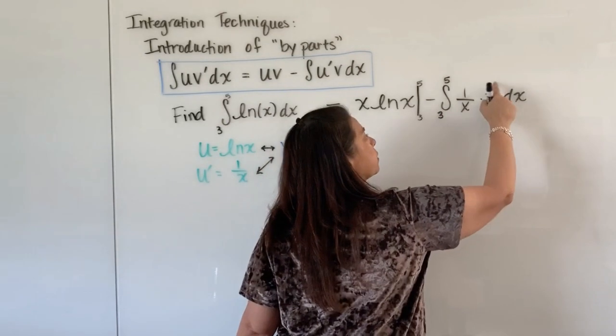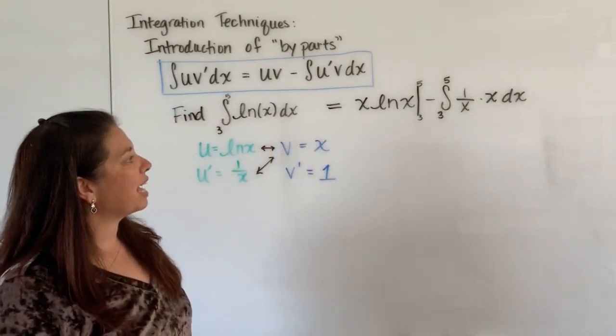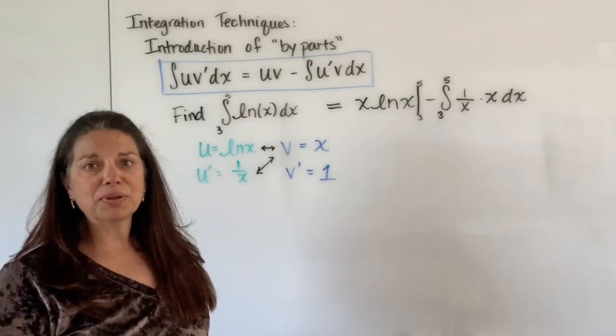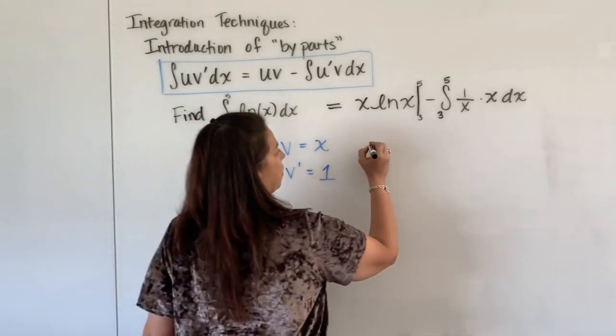Okay, now here's what's really fun. If you look very closely, 1 over x times x, well gosh, that simplifies down to a lovely 1. So if I simplify this, I now have x natural log x of course evaluated from 3 to 5.